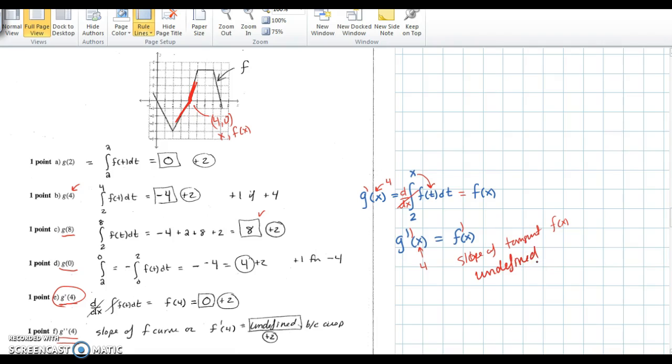And the last problem is that same second derivative now at 6. So if we want g double prime at 6, we're looking for the derivative of f at 6, or the slope at 6. Notice the slope right here is 0. So that answer would be 0.